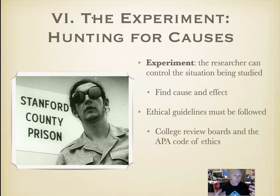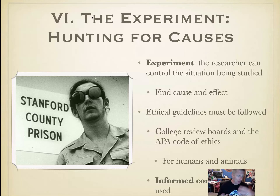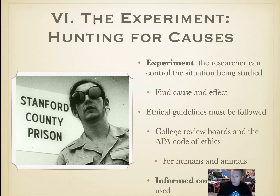Ethics in psychology is basically 'do no harm' — for both humans and animals. There's also informed consent: if a person wants to know the results of a study, they have the right to know that. As a researcher, you don't have to give them all the details upfront, but afterwards they have the right to that data. There should also be debriefing to let them know it was part of an experiment — all part of being ethical.